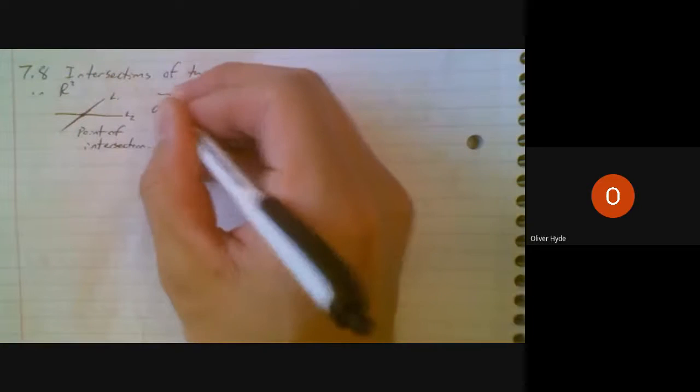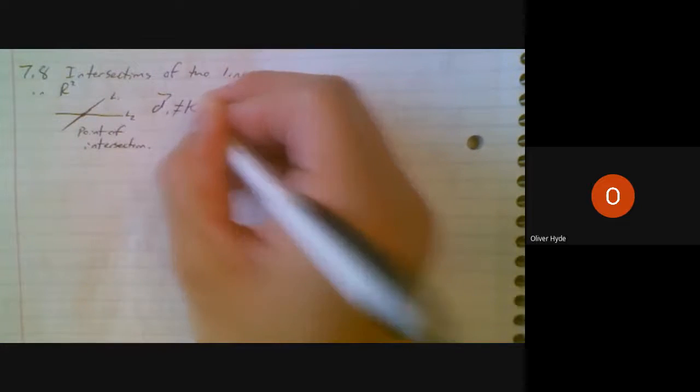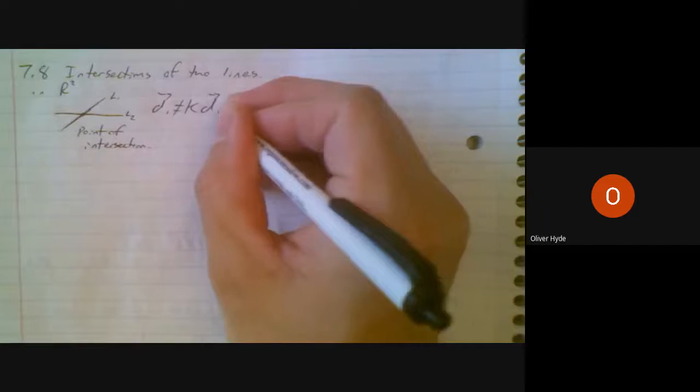If we're talking vectors here, I suppose we would find that their direction vectors are not scalar multiples of each other. So d1 is not equal to k times d2.